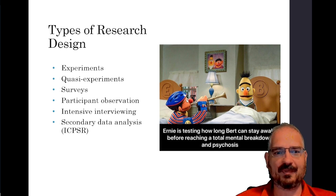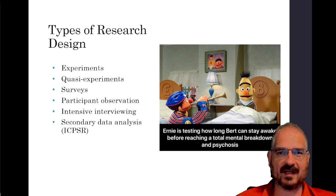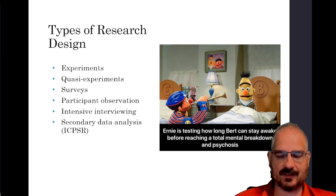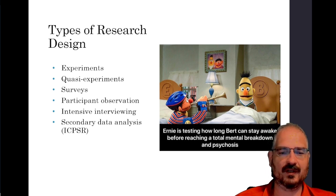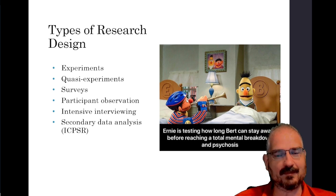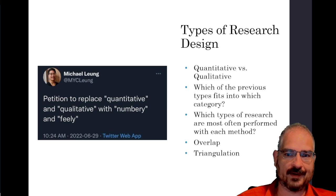With secondary data analysis, you can skip the whole data-gathering step because it's already been done. You just have to find the data, familiarize yourself with it, and go right to the analysis. When I wrote my dissertation to earn my PhD, I used secondary data analysis from a previously collected giant survey of prisoners in both state and federal prisons with hundreds of questions. I was only interested in five of those questions, and as far as I know, I was the first person to attempt to answer my particular research question using that dataset.